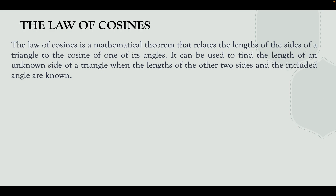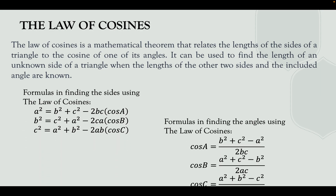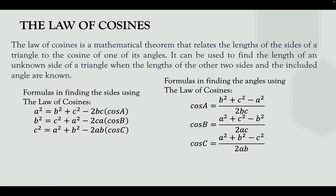Now let's define first what is the Law of Cosines. The Law of Cosines is a mathematical theorem that relates the length of sides of a triangle to the cosine of one of its angles. It can be used to find the length of an unknown side of a triangle when the lengths of the other two sides and the included angle are known.